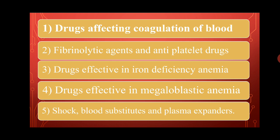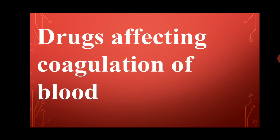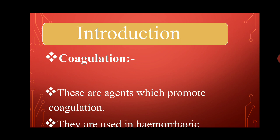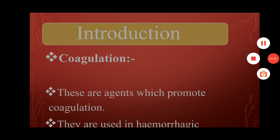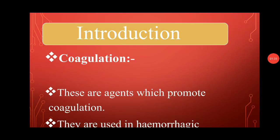The first chapter covers drugs affecting coagulation of the blood. The previous lecture explained coagulation and the coagulant agent. Today's lecture will discuss the anticoagulant agent. Coagulants are agents which promote coagulation and are used in hemorrhagic conditions. Today we will discuss the new topic: anticoagulants.